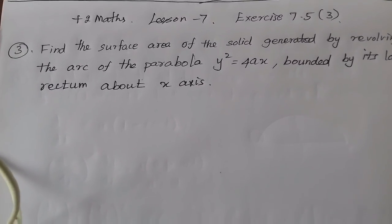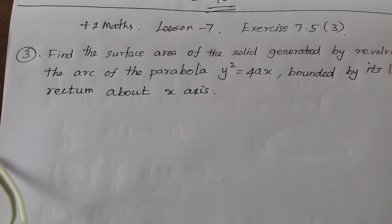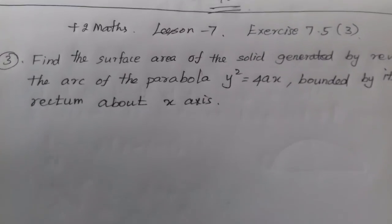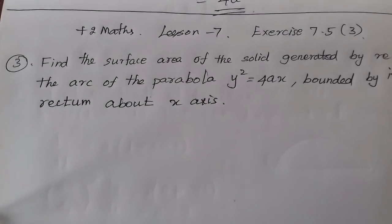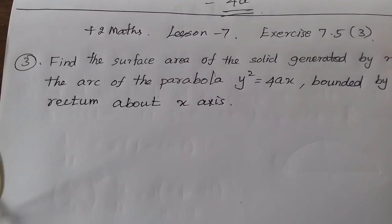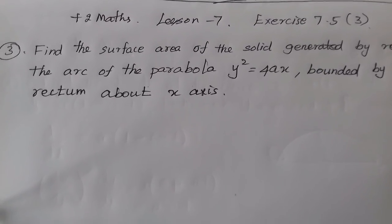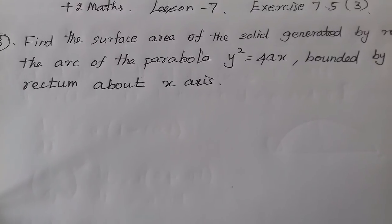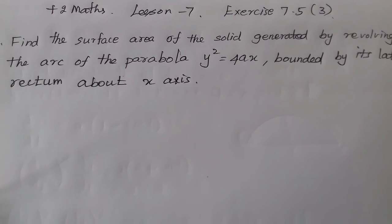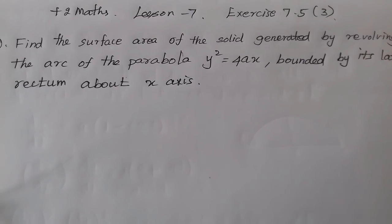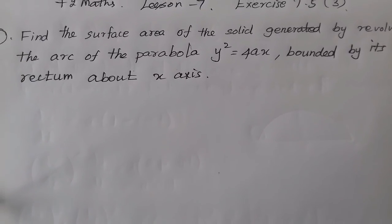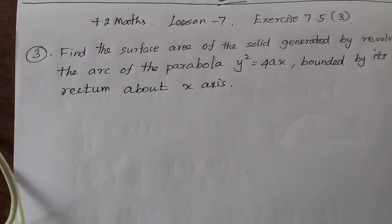In the 7th lesson, find the surface area of the solid generated by revolving the arc of the parabola y² = 4ax, bounded by its latus rectum about the x-axis. This is for Tamil medium students.